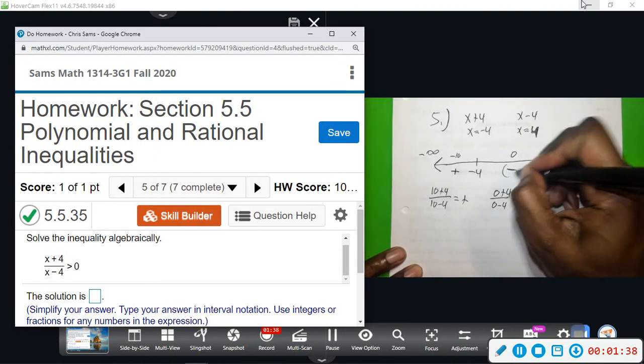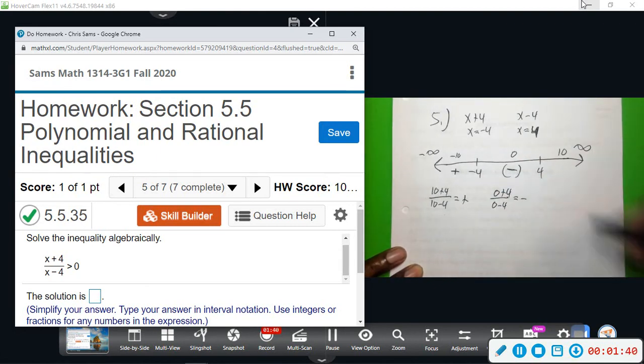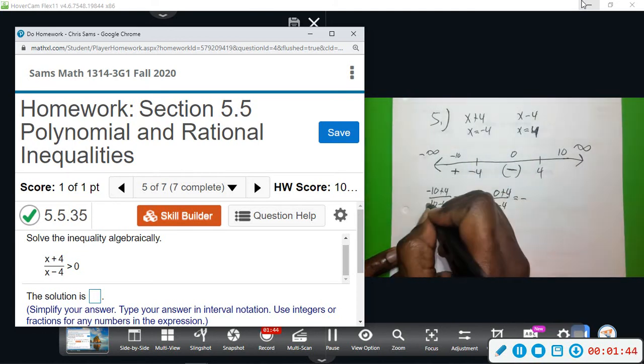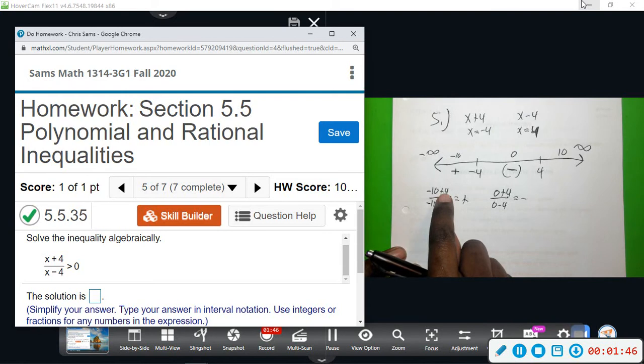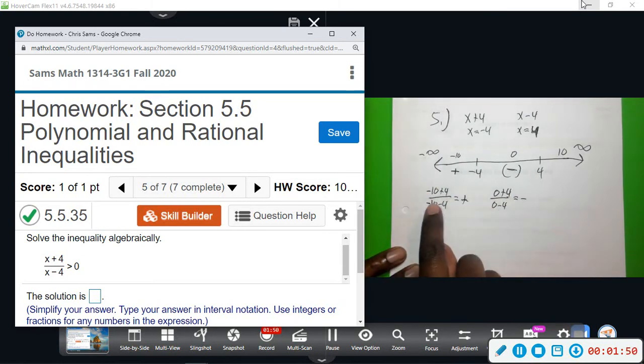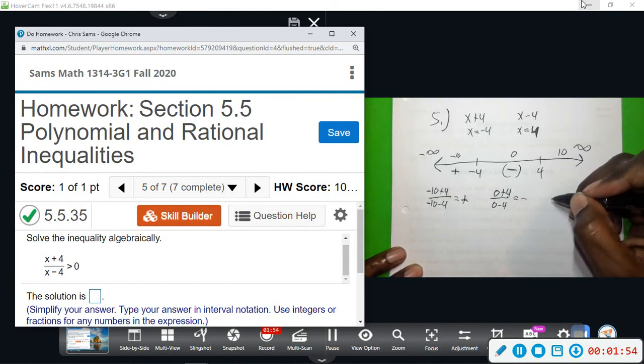And then if I plug in... oh, I messed this up. This should be a negative 10 and a negative 10. That's negative negative divided by negative, will still be positive, so it works out. Negative 6 and negative. Okay, got to be careful with the signs. So this one is positive, this one is negative.